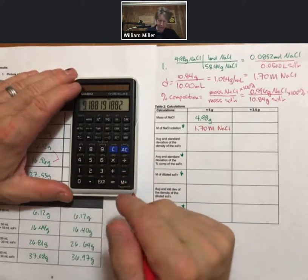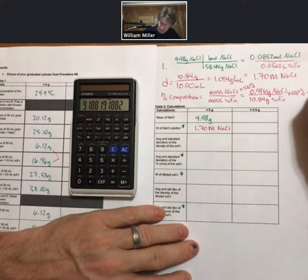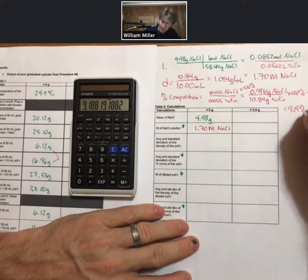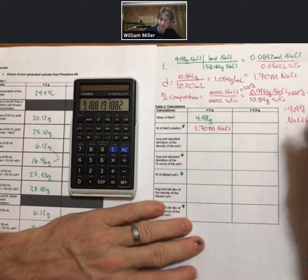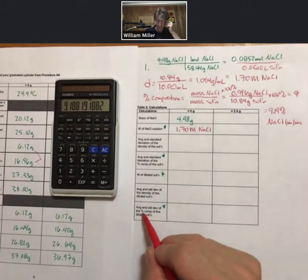And you get 0.996 grams sodium chloride over 10.84 grams of solution times 100%. And I get 9.19 sodium chloride mass by mass. That is my percent composition.